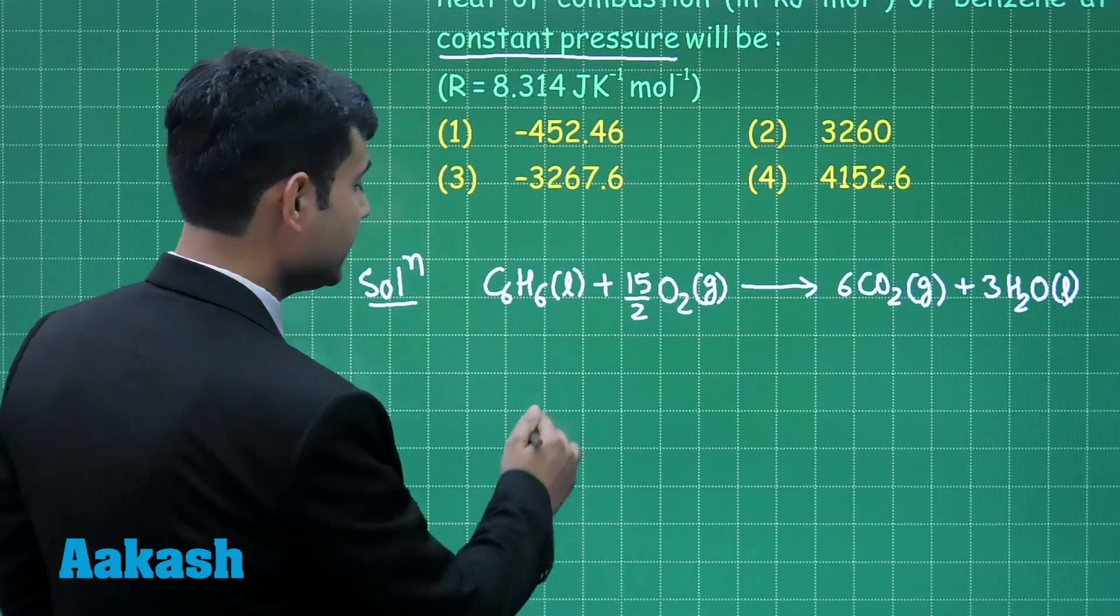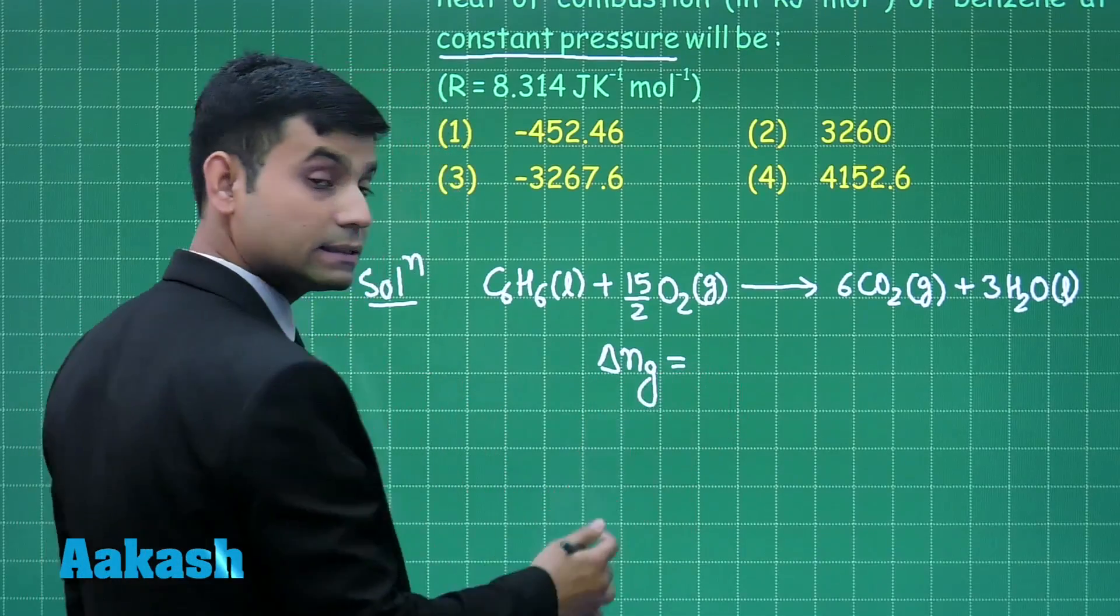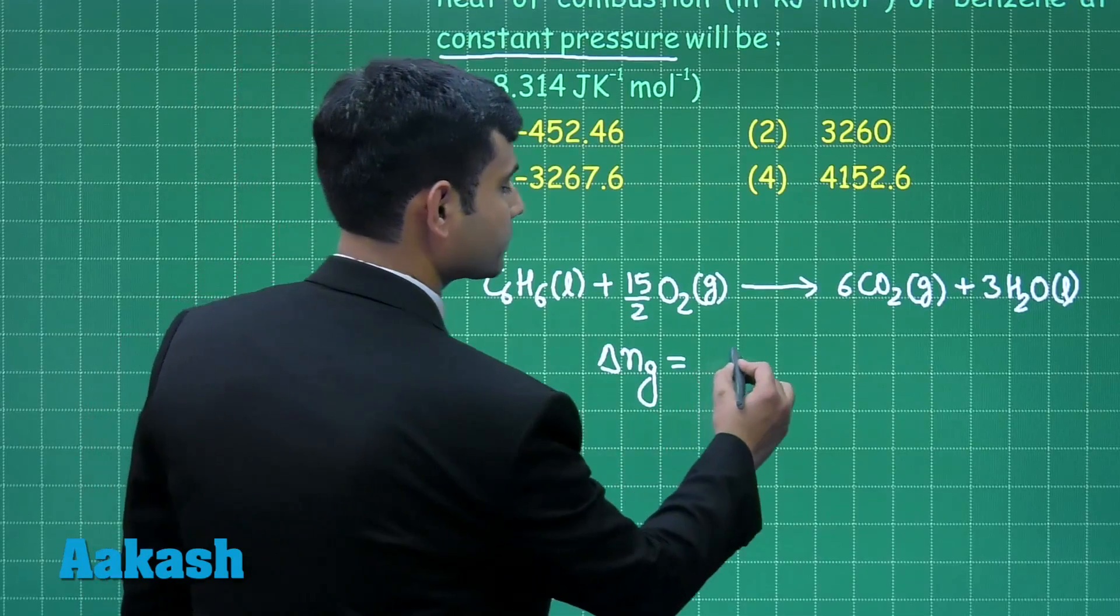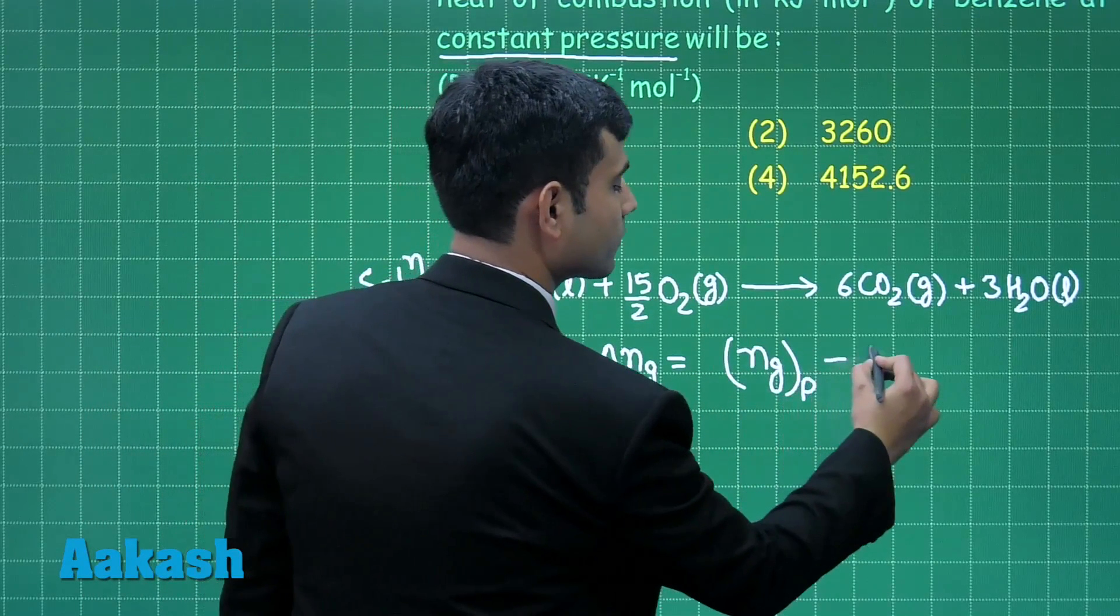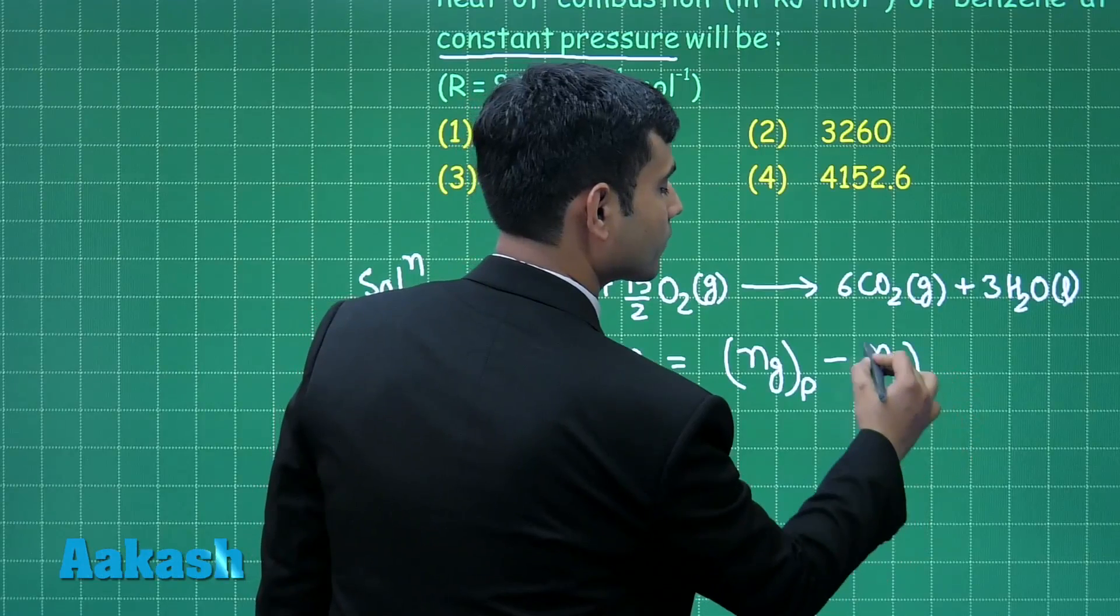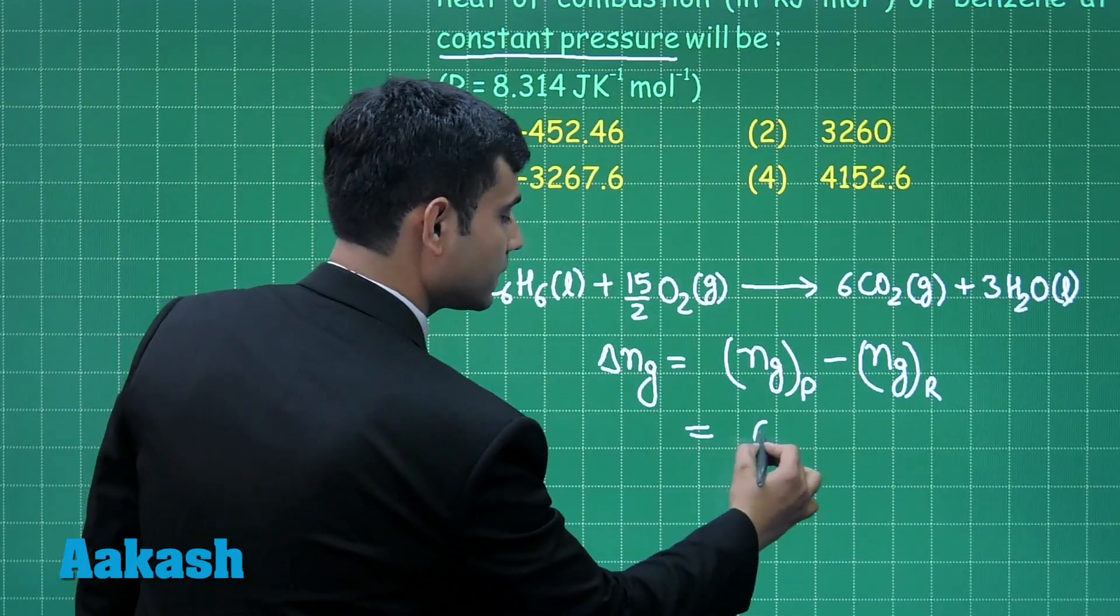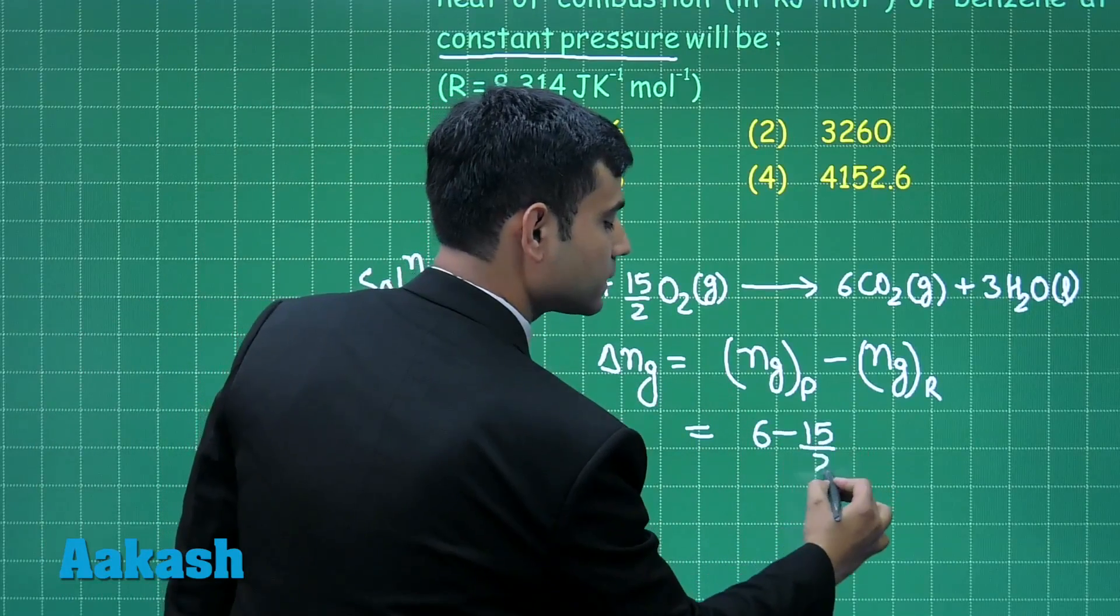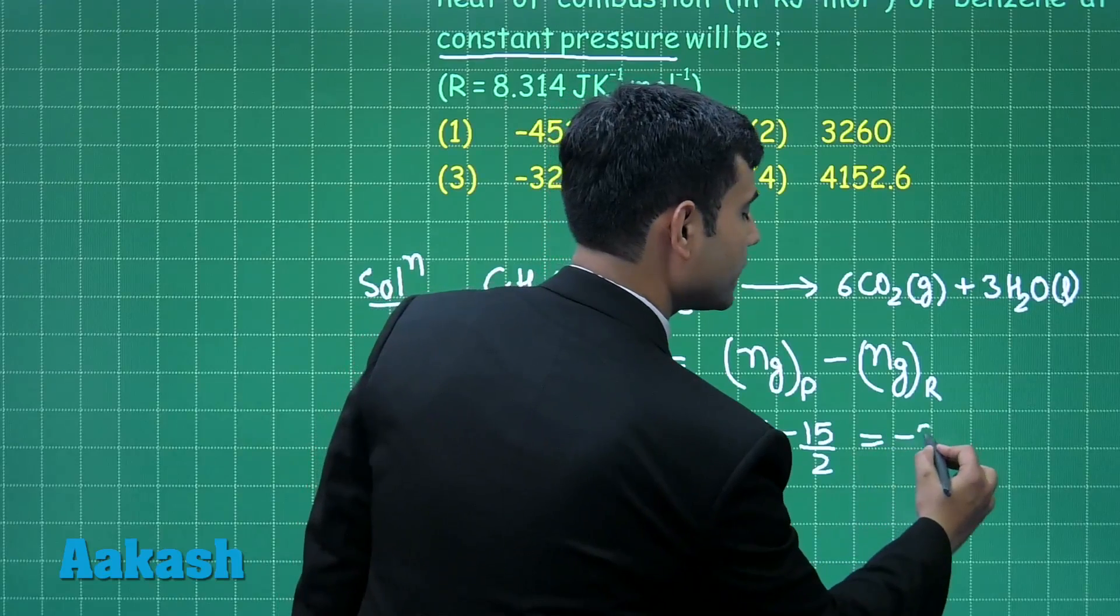Now, here delta NG will be equal to number of moles of gases in the product minus number of moles of gas in the reactant. In product we have 6 moles of the gas and in the reactant we have 15 by 2 moles of oxygen. On solving, it will give us delta NG equal to minus 3 by 2.